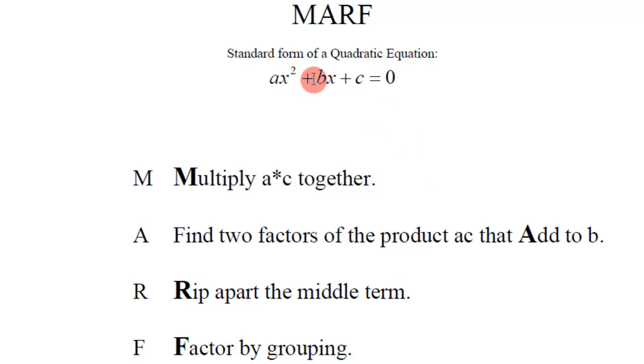R means to rip apart that middle term. Once you have the two factors, you take the B, you rip it apart from one term into two terms. And then F, factor by grouping.